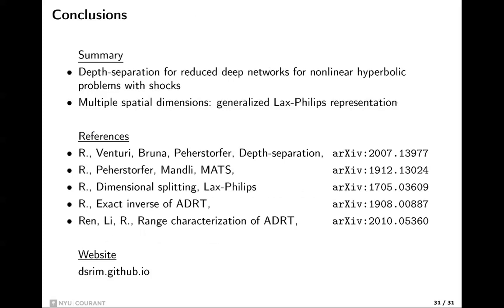The summary: there is a depth separation for reduced deep networks for nonlinear hyperbolic problems. You can represent them very efficiently with few parameters using a particular network with a low-rank structure. This generalizes to multiple spatial dimensions using a generalization of the classical Lax-Phillips approach via the Radon transform. The depth separation result appears in one paper, the Radon transform and Lax-Phillips connection in another, and the exact ADRT inversion formula in a short paper, with recent work characterizing the range.